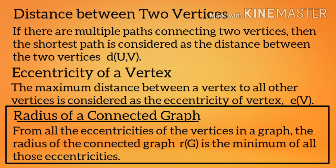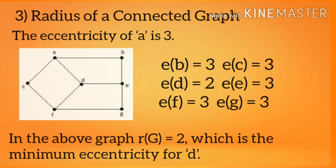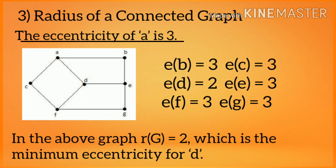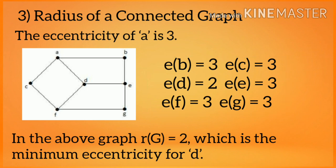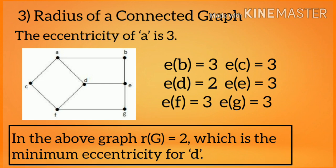Radius of a connected graph: from all the eccentricities of the vertices in a graph, the radius R(G) is the minimum of all those eccentricities. Eccentricities: E(A) = 3, E(B) = 3, E(C) = 3, E(D) = 2, E(E) = 3, E(F) = 3, E(G) = 3. In the above graph, R(G) = 2, which is the minimum eccentricity of vertex D.